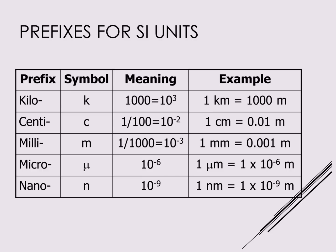Now we're going to look at prefixes for SI units. We can measure any length in terms of meters, but it's not always the most convenient way to report it. If it's a very small distance it might be easier to report in millimeters, micrometers, or nanometers depending on the actual length. If it's a very long distance, maybe kilometers is a better way to report that.